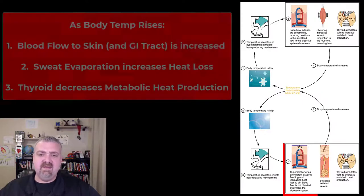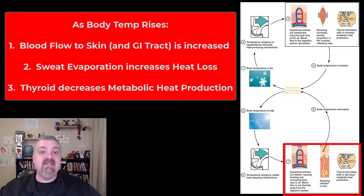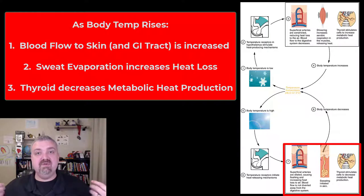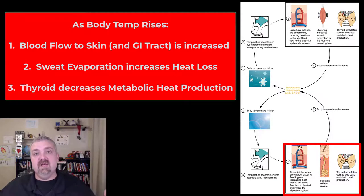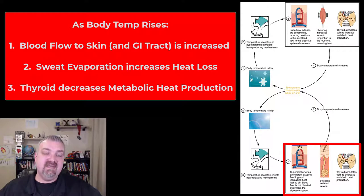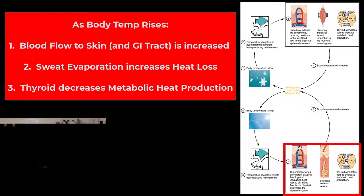On the flip side, if it's hot out and your body temperature gets high, the hypothalamus will not like that either and will do what it can to bring your temperature down. It's going to dilate superficial arteries — you want more blood flowing to your skin and gut, because those two huge surface areas are a great way to lose heat, with the skin being most important. That warm blood rushes to your skin and radiates off heat. On top of that, sweating is going to be initiated, so you'll be getting rid of heat through radiation, convection from a breeze or fan, and sweat evaporation.